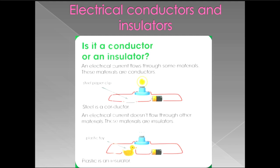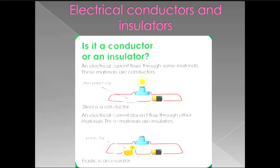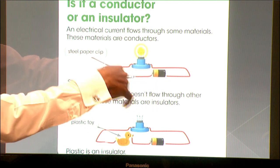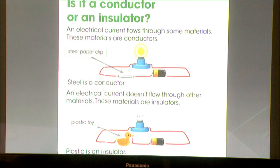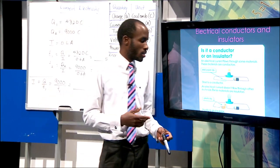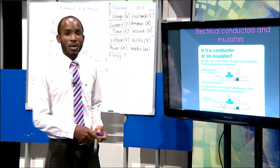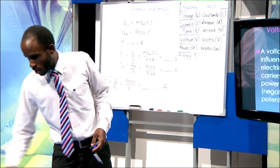A simple experiment to test conductor or insulator: we have a battery, a device to show current, the test material, and connecting wires. When a paper clip (metal) is placed in the circuit, the bulb lights — steel is a conductor. When a rubber or plastic duct is placed in, the bulb doesn't light — plastic is an insulator and won't allow current to flow.